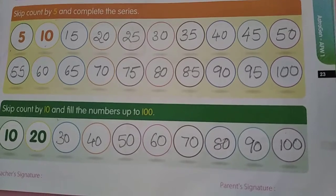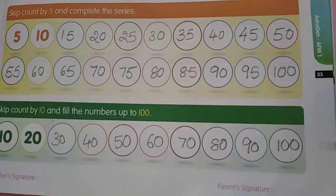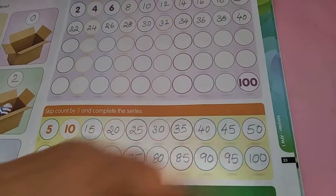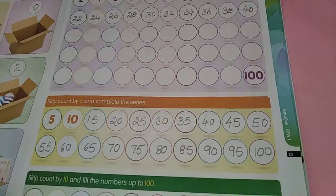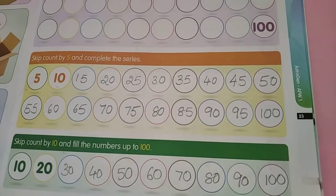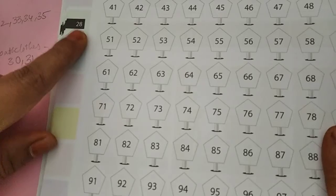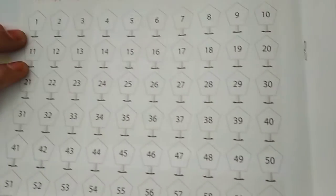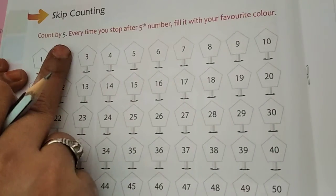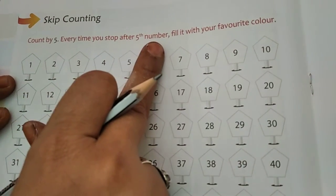Children, write like this — write neatly. You fill only skip counting of 2, up to 100 numbers. Okay children, write like this, write neatly. Children, take your activity book, page number 28 — skip counting. Count by 5 — every time you stop after the 5th number.